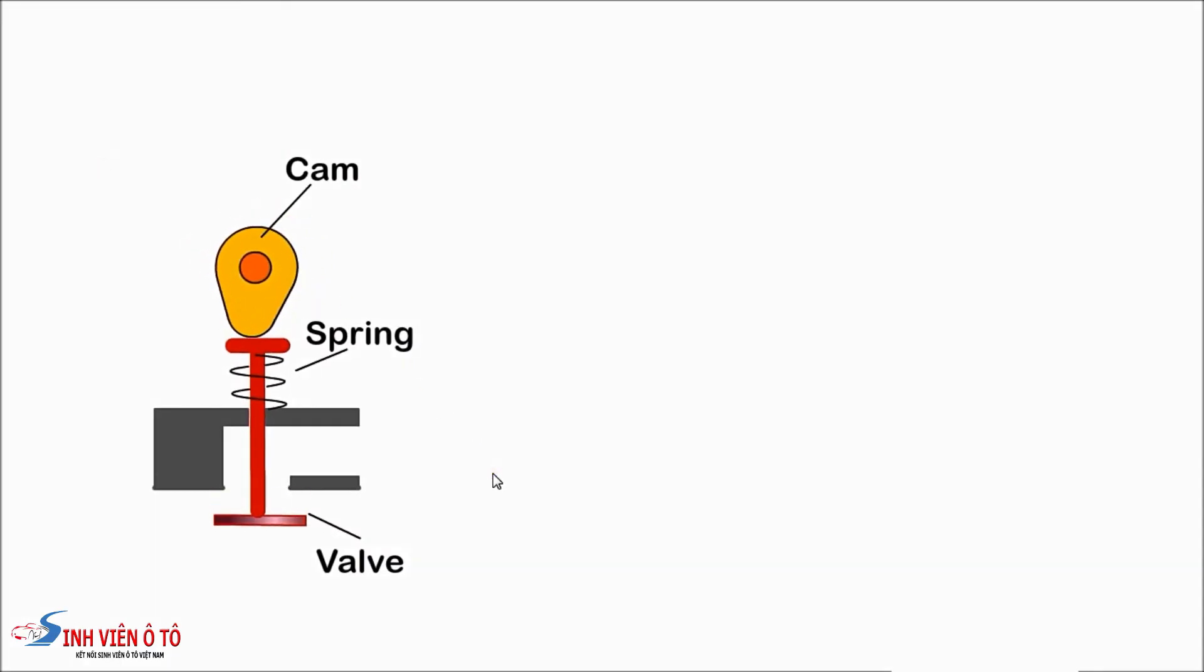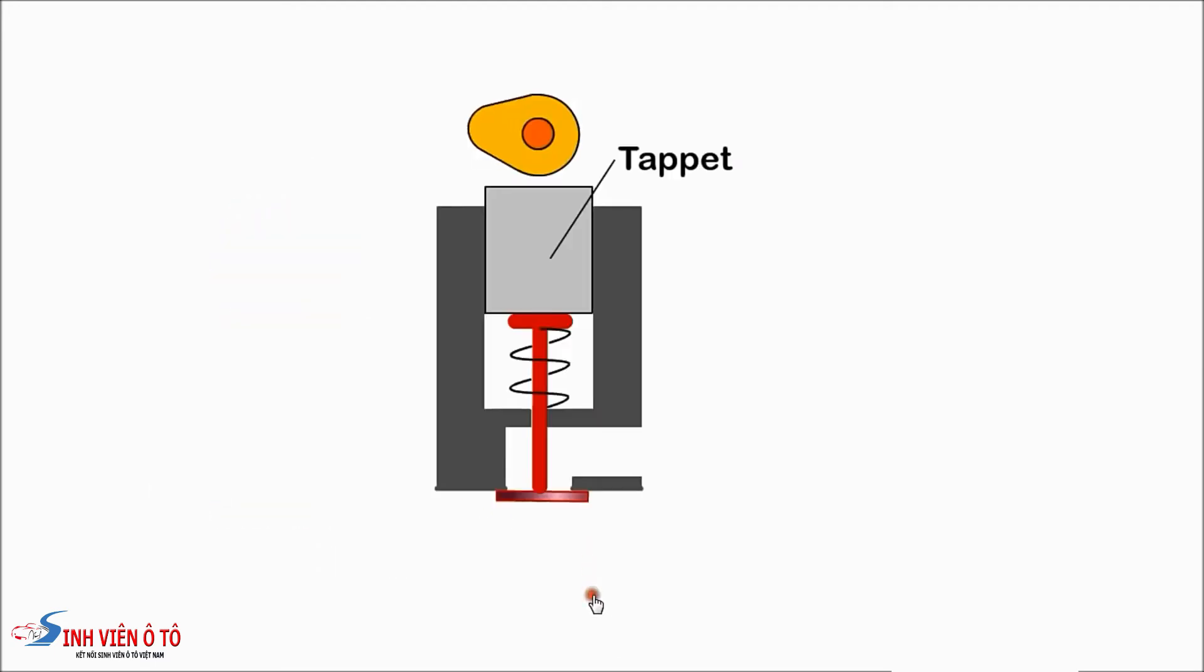A camshaft can operate the valve directly, or usually a cam follower or tappet is used between the cam and the valve. Sometimes the camshaft lobe is offset from the center of the valve and tappet to encourage the tappet and valve to rotate as it is pushed down.